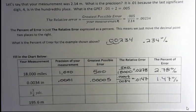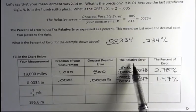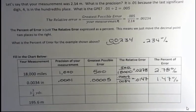So we have a lot of things that have the word error in there - greatest possible error, relative error, percent error. But relative error and percent error are just the decimal version and then the percent version. So that's not too bad.